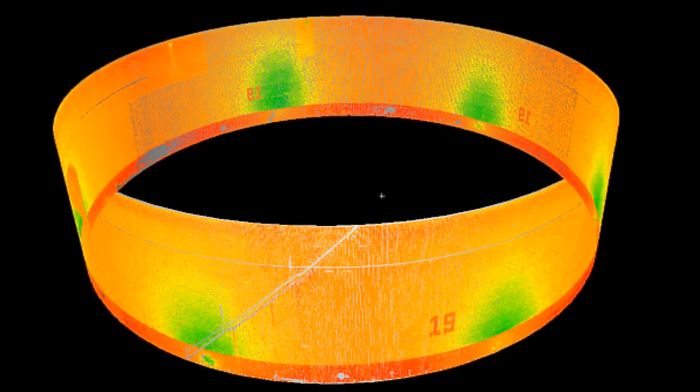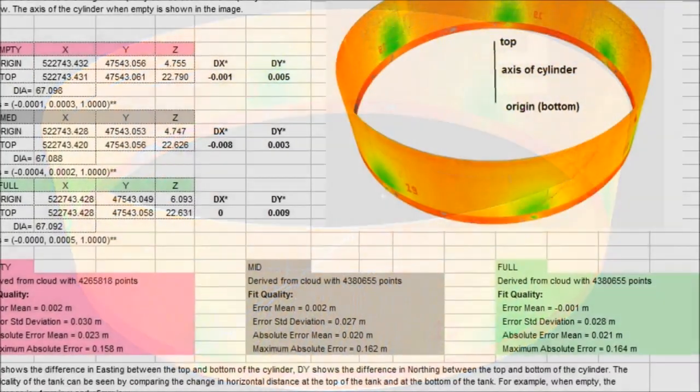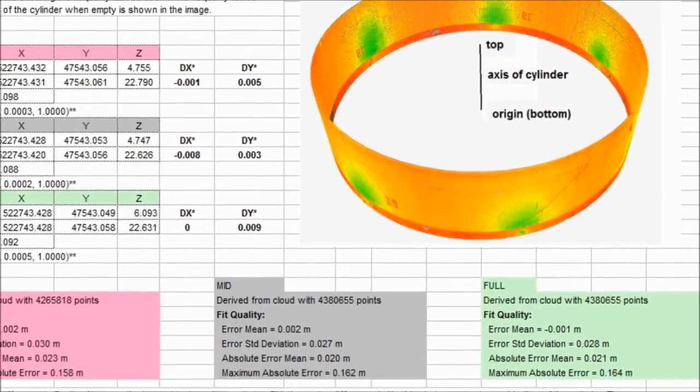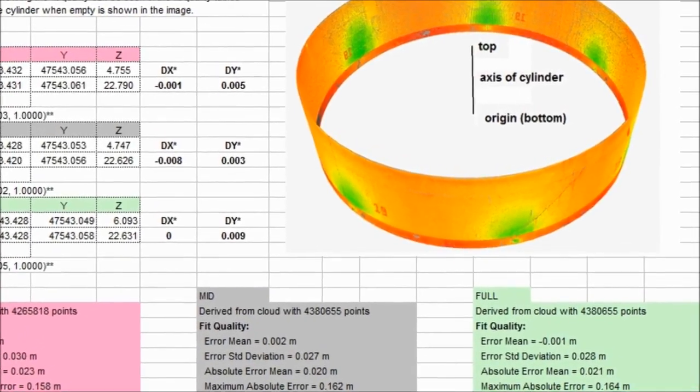Laser scanning allows us to use the millions of points surveyed on the tank wall, which we can best fit a cylinder through. The axis of the cylinder indicates the overall tank verticality.